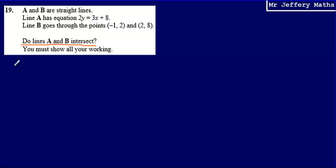So if I take line A, I'm going to work out what is the gradient of line A. Then I'm going to work out what the gradient of line B is. And if the gradients are the same, then I can say that they are parallel and they will never intersect. If they're different, then they're not parallel and therefore they will intersect.